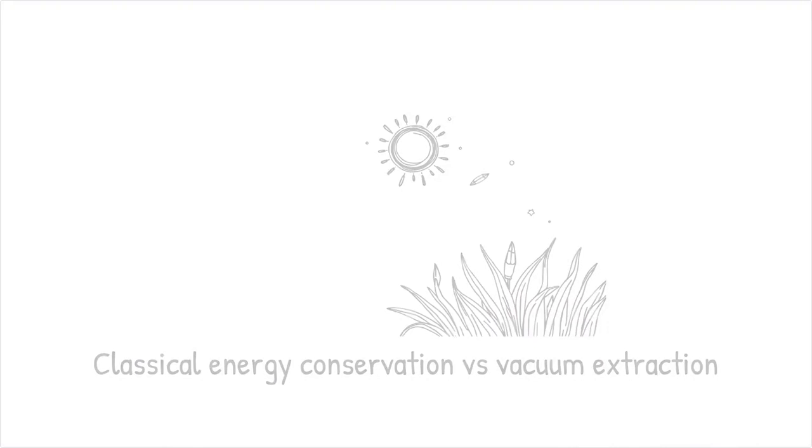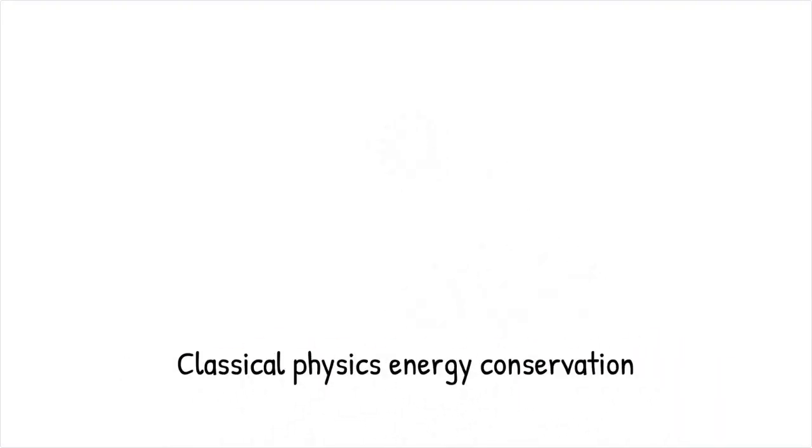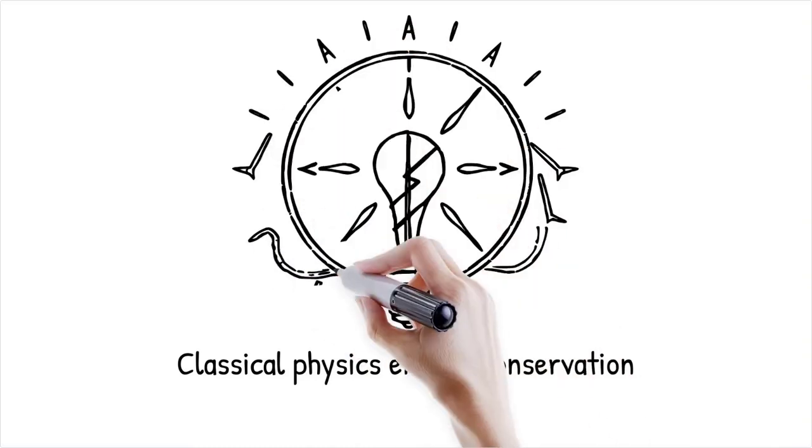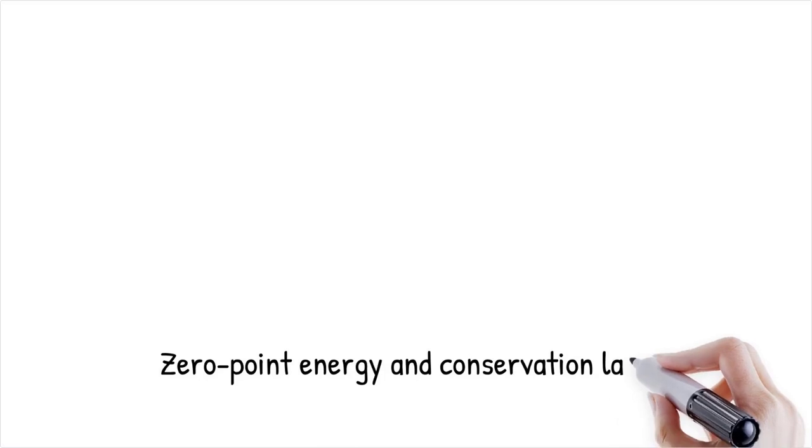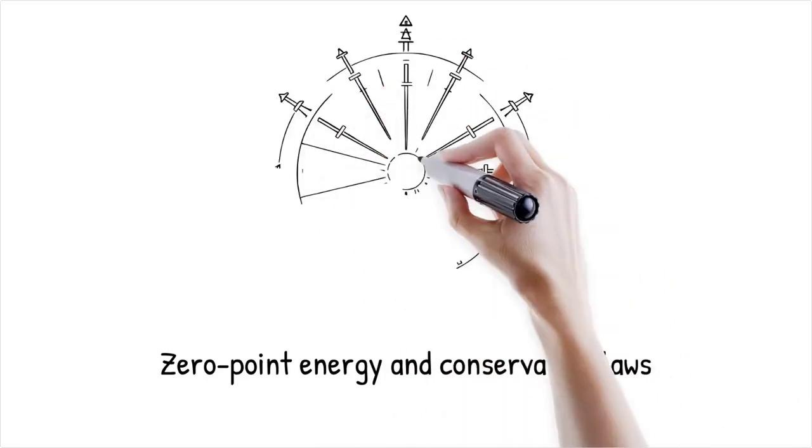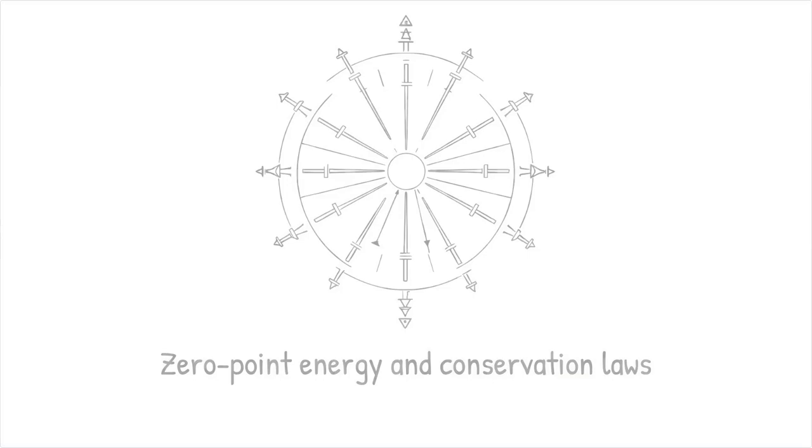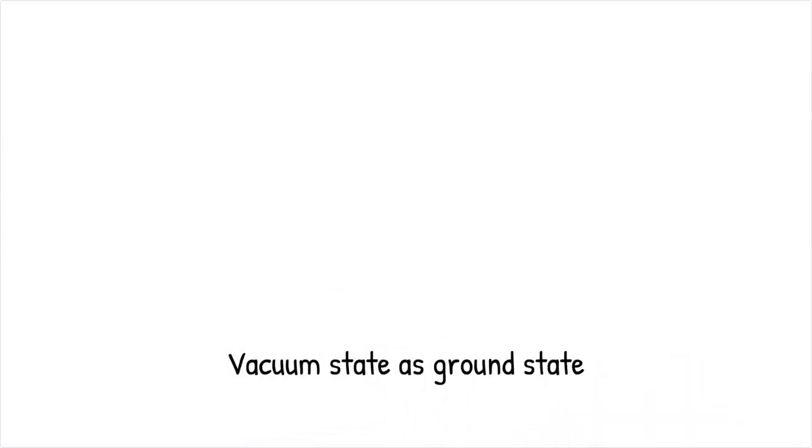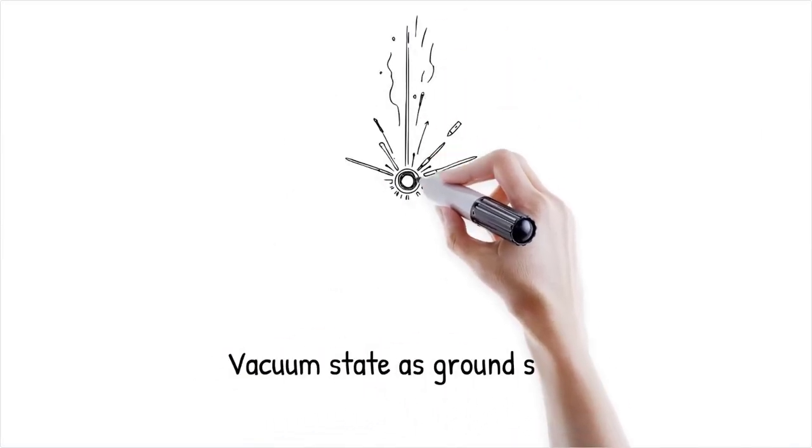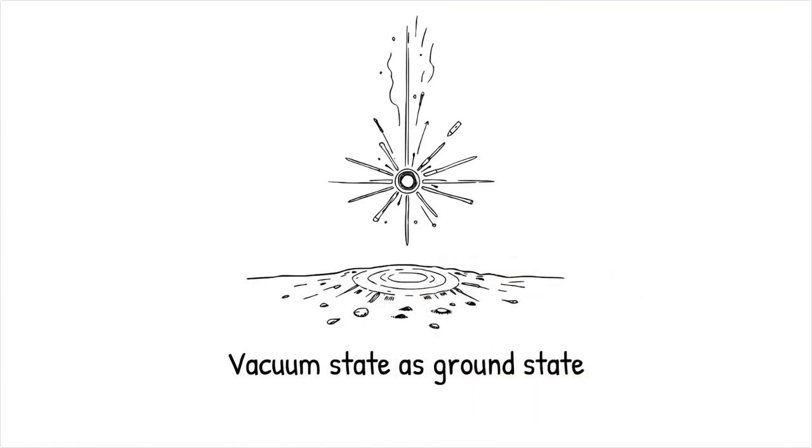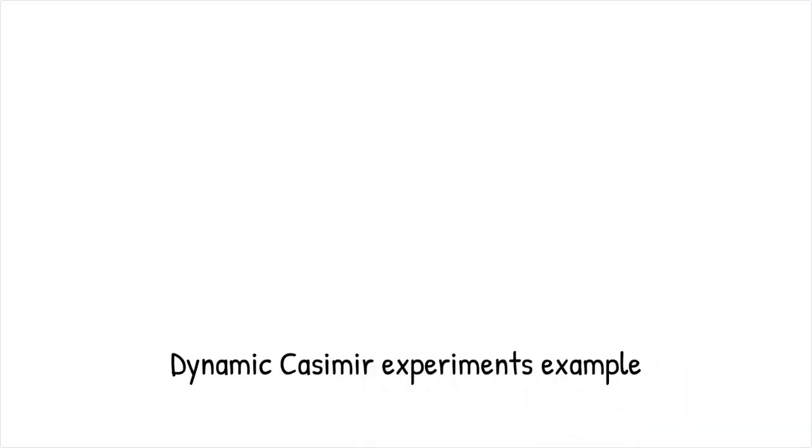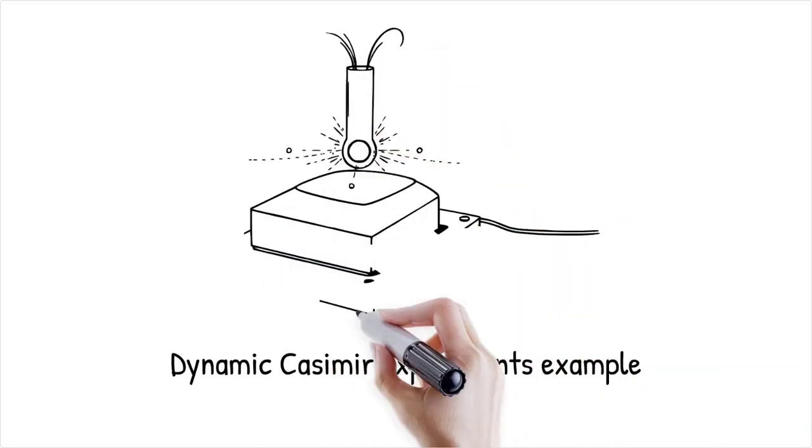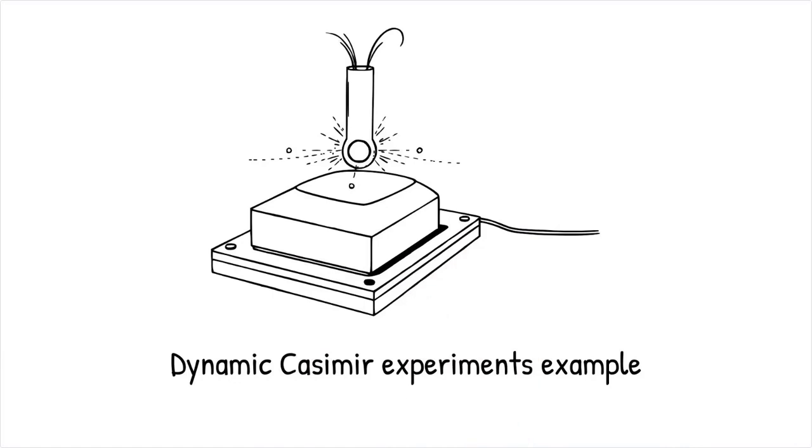Classical physics dictates that energy is conserved, meaning that energy can neither be created nor destroyed, but only transformed. In the quantum vacuum context, although zero-point energy exists, any extraction attempt must still obey conservation laws. The vacuum state is considered the ground state. Extracting energy would imply a violation of this foundation unless counterbalanced by energy input from an external source. In dynamic Casimir experiments, moving boundaries may generate photons from the vacuum, but the energy to move these boundaries is externally supplied, ensuring overall energy conservation.